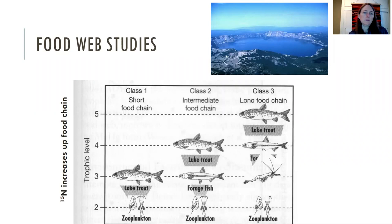Here's another example. Say you have short food chains with just zooplankton and a lake trout, or you have an intermediate food chain, or you have zooplankton, a forage fish, and then lake trout, or you might have zooplankton, a mysid shrimp, forage fish, and a lake trout. So in all of these cases, that lake trout might have a slightly different nitrogen isotope signature because the complexity of the food chain is longer in some of those systems.